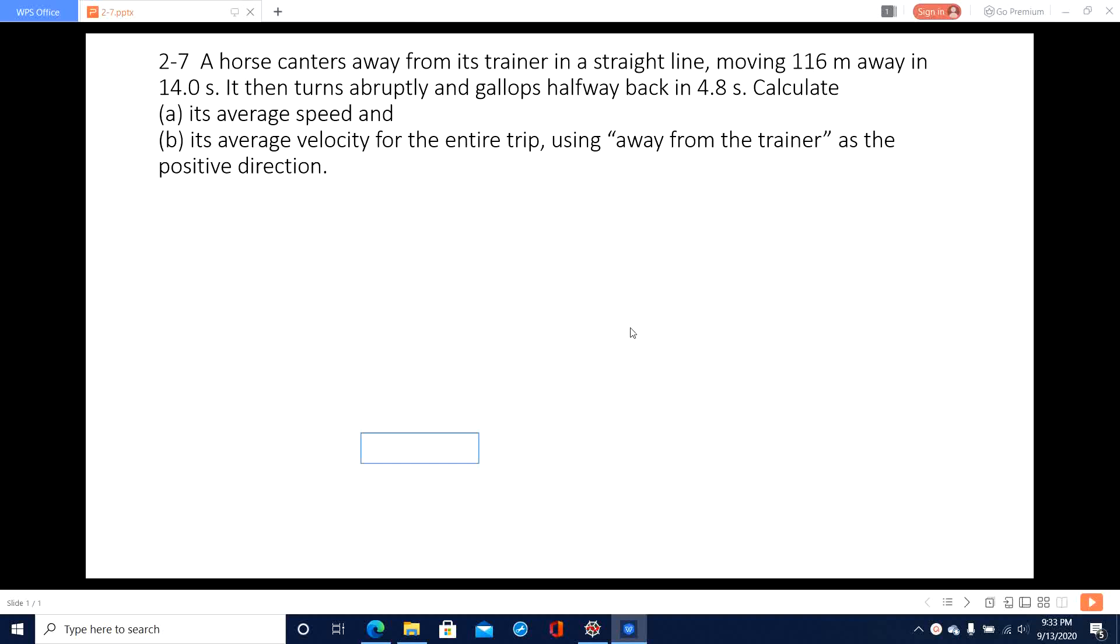Hello, welcome to my channel. I'm Zhang Jimxu, and now let's talk about physics problems in chapter 2. Before we solve the problems, let's draw a picture. When we read the sentence, it tells us a horse canters away from its trainer in a straight line.